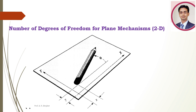If I want to define the position of this pencil, what are the minimum required parameters? One: the X distance from the origin. Two: the Y distance from the origin. Three: the included angle from the horizontal axis. So the minimum number of parameters required to define its position — called the degrees of freedom — is three: X, Y, and angle theta.